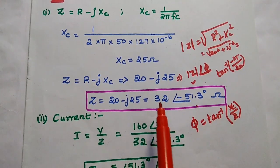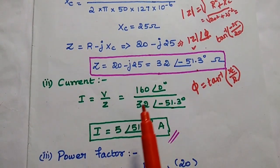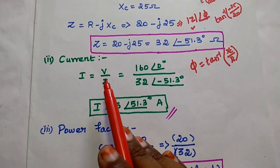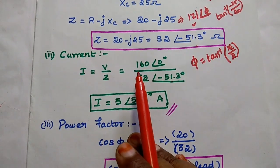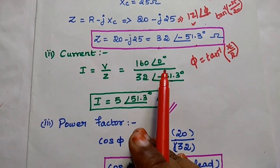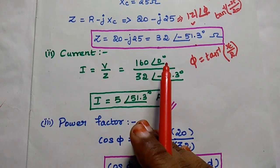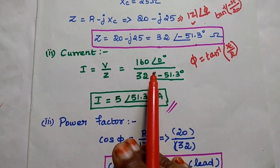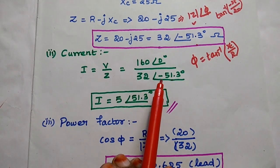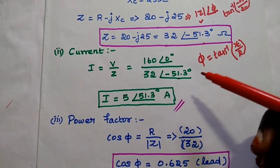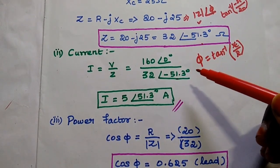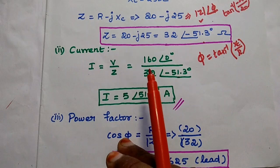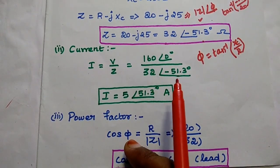The impedance in both complex and polar form is now established. Next, we find the current. The formula is: current equals voltage divided by impedance. Voltage is 160 volt; since no phase is given we assume 0 degrees. So I equals 160 at 0 degrees divided by 32 at minus 51.3 degrees. In division, we use only the polar form.